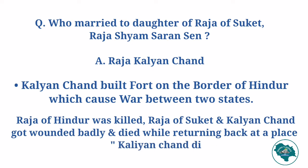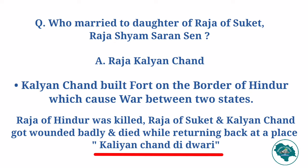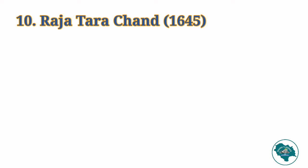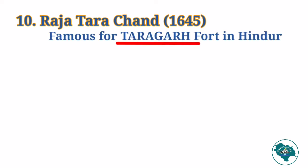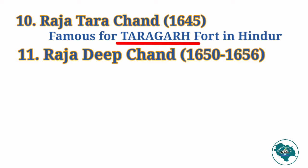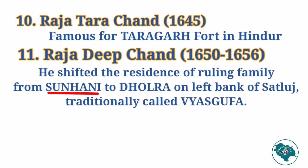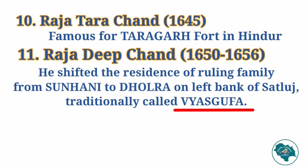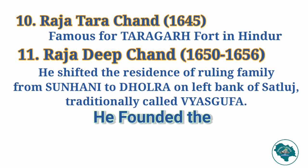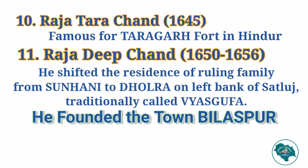The Sukhet Raja and Kalyanchand were badly wounded and died at a place called Kalyanchandidwari while returning to Bilaspur. After him came Raja Tarachand, famous for building Taragad fort in Hindur. After him was Raja Deepchand from 1650 to 1656. He shifted the residence of the ruling family from Sunhani, near present-day Jhanduta, to a new place, Dholra, on the left bank of river Satluj — traditionally called Vyaskufa. He founded the town Bilaspur and changed the salute from 'Jai Deva' to 'Raja', 'Jai' to 'Miani', and 'Ram Ram' to 'Rana's'.